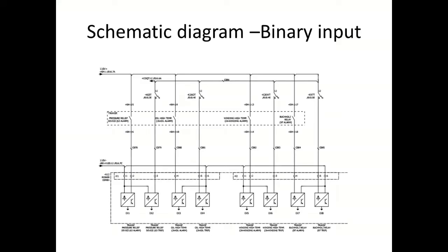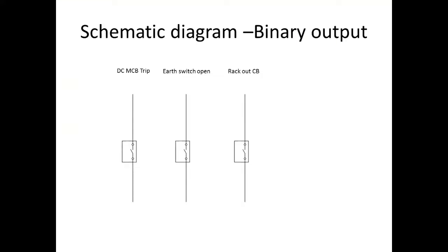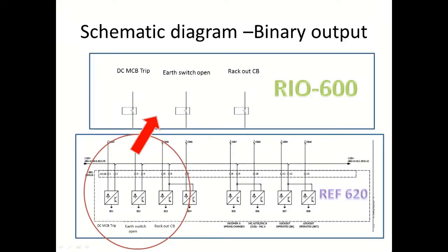This is the schematic. According to the schematic, we are going to configure 8 binary inputs, which are transformer protection signals going to the RIO. And from the RIO, our main relay is going to take this input. Similarly, we are going for 3 outputs. Our RIO relay is going to make these 3 outputs, which correspond to 3 inputs of the REF relay.